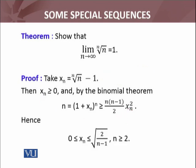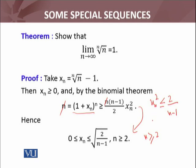Yahaan se jo x_n² hai, is inequality se I can write: x_n² ≤ 2/(n−1), since n will cancel out. So x_n² ≤ 2/(n−1), and since these are positive terms and n ≥ 2, I can take the square root: x_n ≤ √(2/(n−1)), which is valid for n ≥ 2.